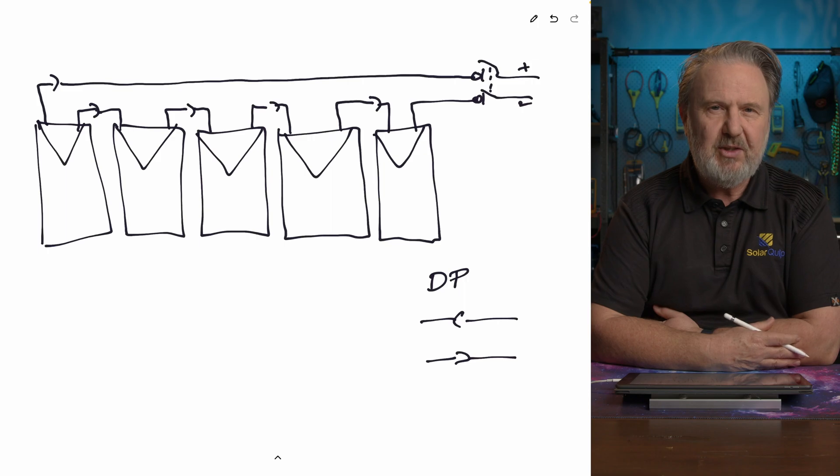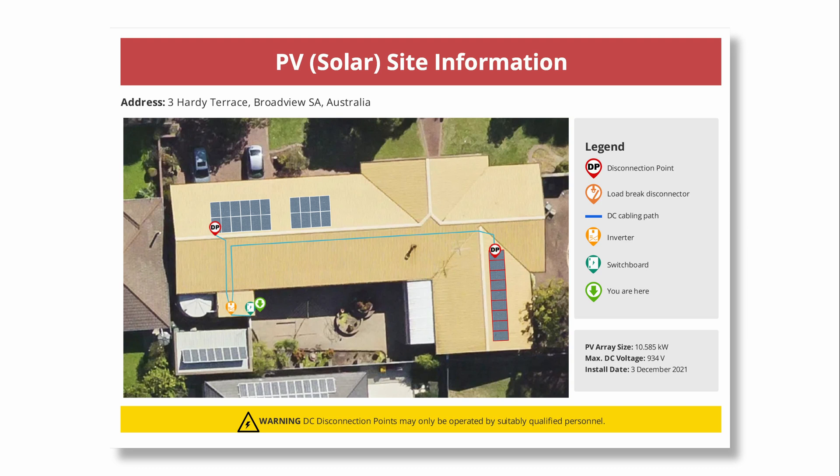The disconnection point is required to be labeled on the site plan — the solar site plan. This is only going to be in newer systems, probably since 2022 or for those adopting the new standard. That disconnection point requires a label at the solar site plan, which should be in a location that can be seen easily — that may well be the main switchboard or near the inverter — and it should identify those points.